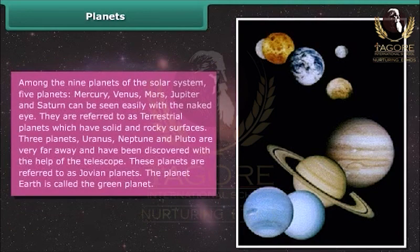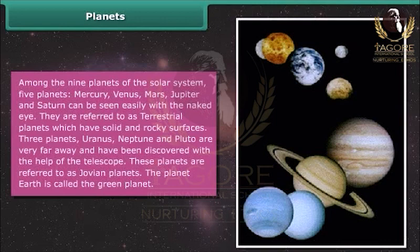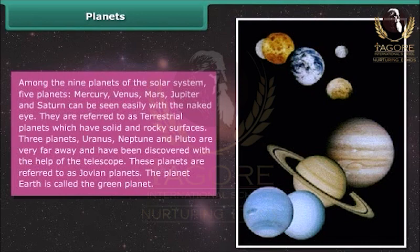Among the nine planets of the Solar System, five planets — Mercury, Venus, Mars, Jupiter, and Saturn — can be seen easily with the naked eye. They are referred to as terrestrial planets, which have solid and rocky surfaces. Three planets — Uranus, Neptune, and Pluto — are very far away and have been discovered with the help of the telescope. These planets are referred to as Jovian planets. The planet Earth is called the Green Planet.